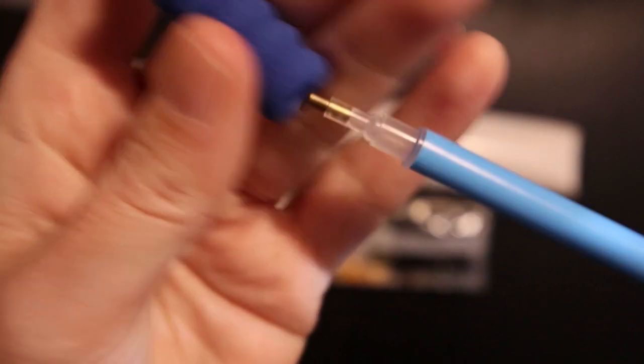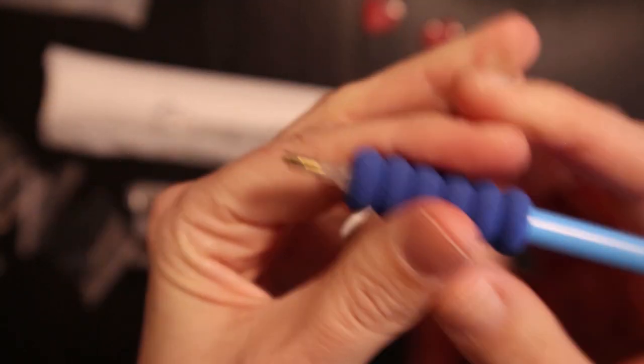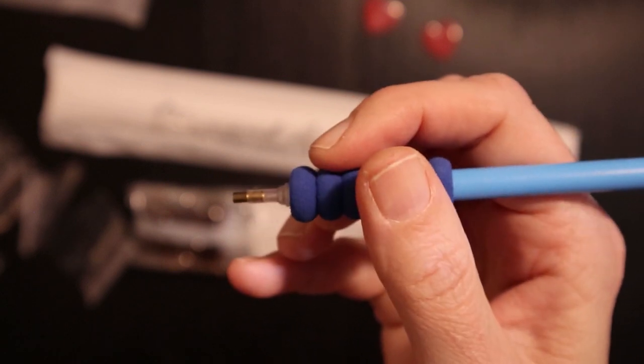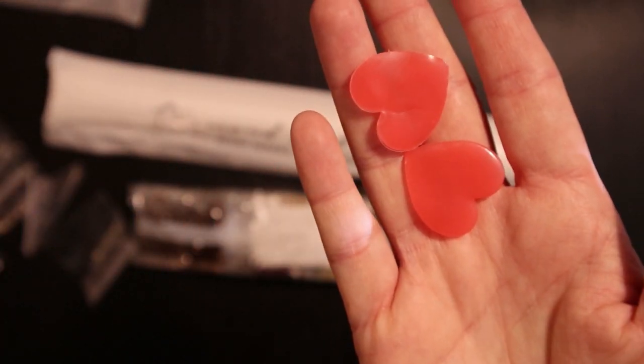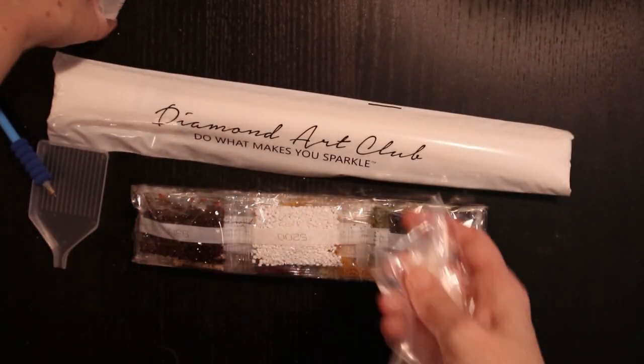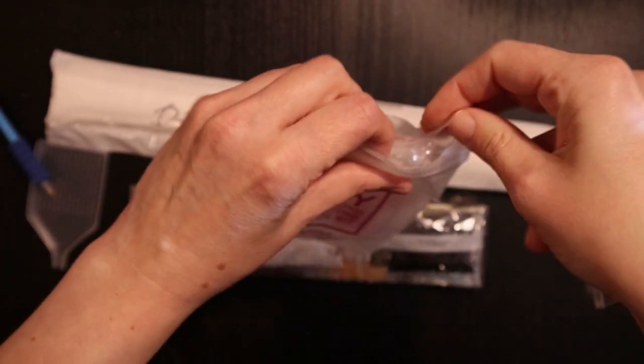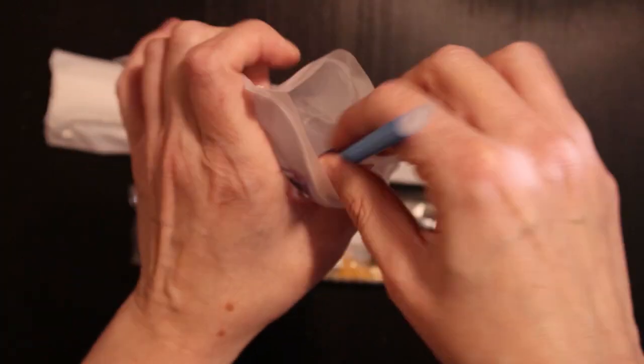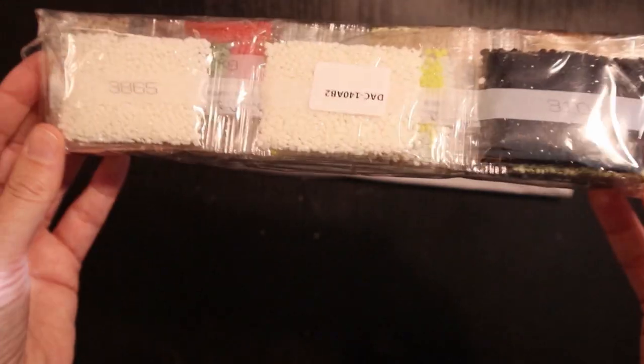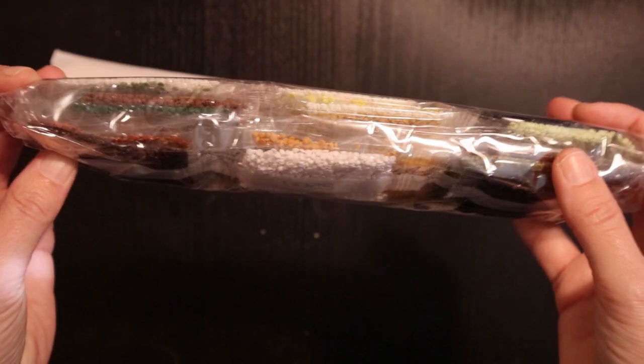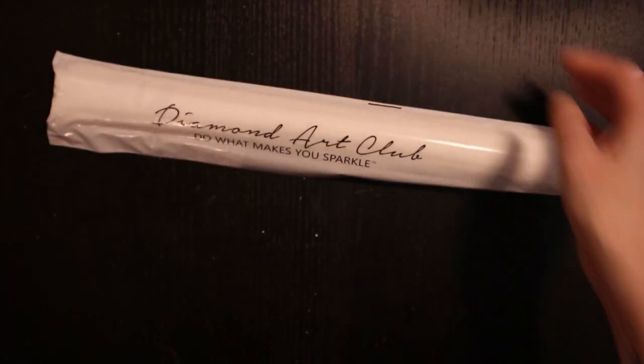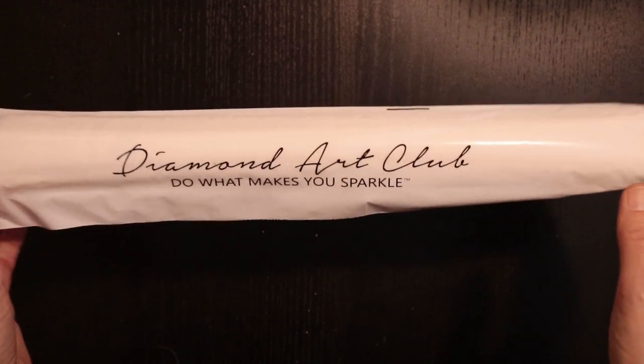You get a squishy to put on your pen so it's nice and comfy to drill. For the drilling you need your wax and you get two heart-shaped waxes. Here's a little bag with drills but we're gonna take a closer look at them later because first we want to see what's in here.